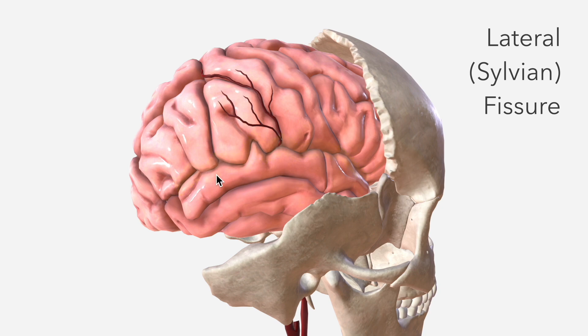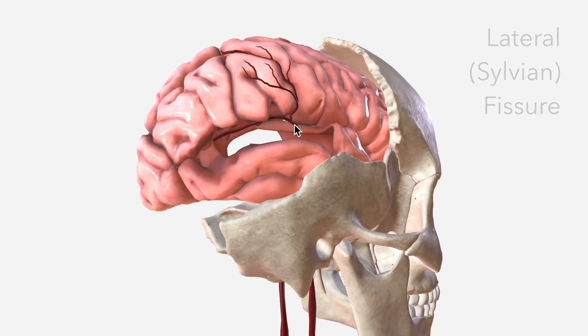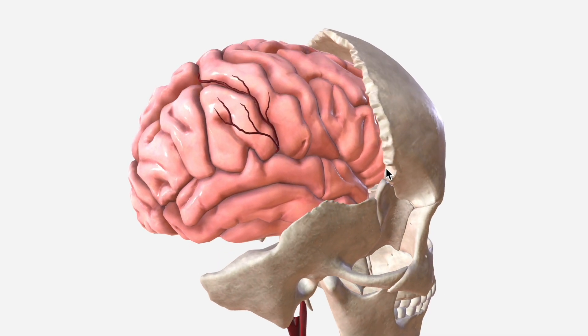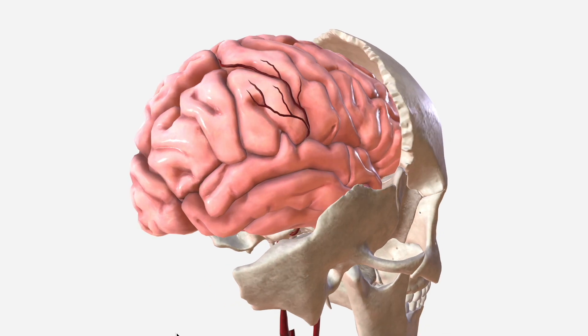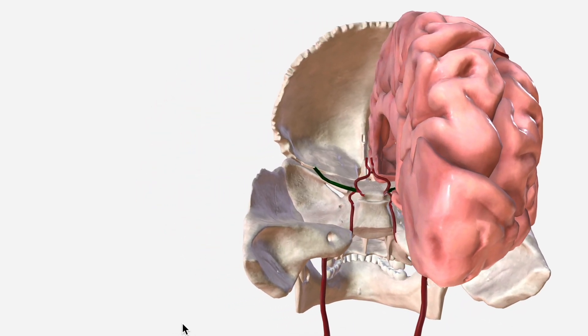Removing the gyrus directly beneath that, there's the inferior terminal branch. The terminal branches of the MCA lie deep within the folds of the cerebral cortex. The branches from these terminal branches typically extend over the external surface of the cerebral cortex.